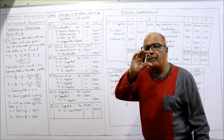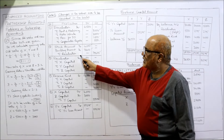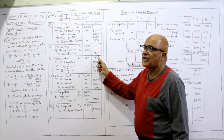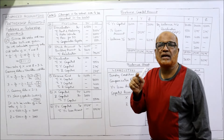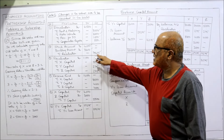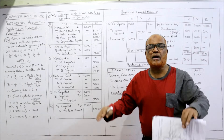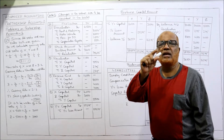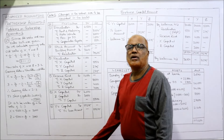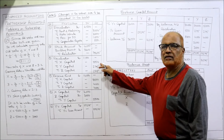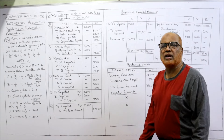All assets have been revalued. Revaluation account credit side = 7,600; debit side = 6,500. Credit side is more, so there is a profit on revaluation: 7,600 - 6,500 = 1,100. This profit will be shared by all partners in the old ratio 2:1:1. Entry: revaluation account debit to X capital, Y capital, Z capital. X gets 1,100 × 2/4 = 550; Y gets 1,100 × 1/4 = 275; Z gets 1,100 × 1/4 = 275.